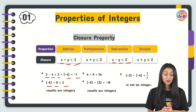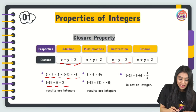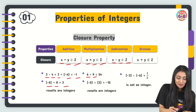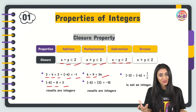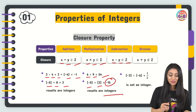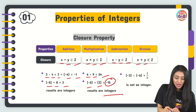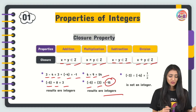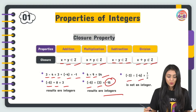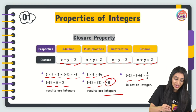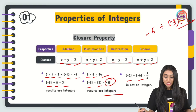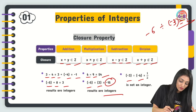Closure property under multiplication states that the product of any two integers is also an integer. For example, 6 × 9 = 54, and (−5) × 3 = −15 — both integers. However, for division, x ÷ y does not necessarily belong to integers. For example, (−3) ÷ (−6) = 1/2, which is not an integer. So division does not follow the closure property.